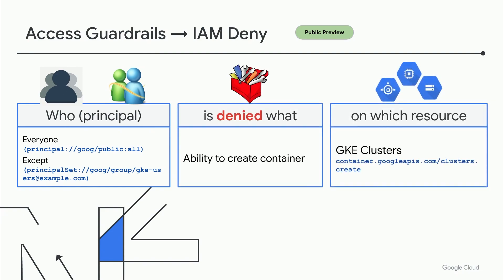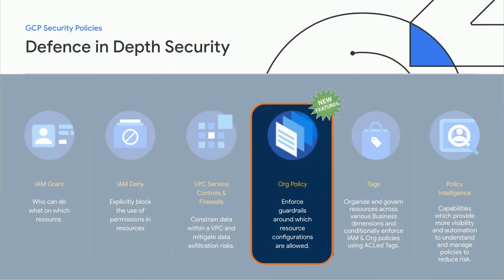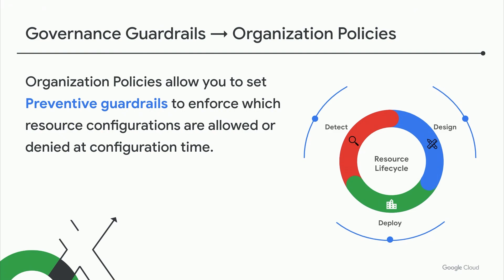This ensures least privilege and gives Taylor the ability to put some controls in place to help with cost management. To truly enable preventive security, Taylor also wants to implement governance guardrails — specifically, to make sure developers only deploy trusted workloads for containers and serverless. This is where org policy comes in. Org policy allows you to set guardrails to enforce which resource configurations are allowed or denied through the entire lifecycle of a resource.